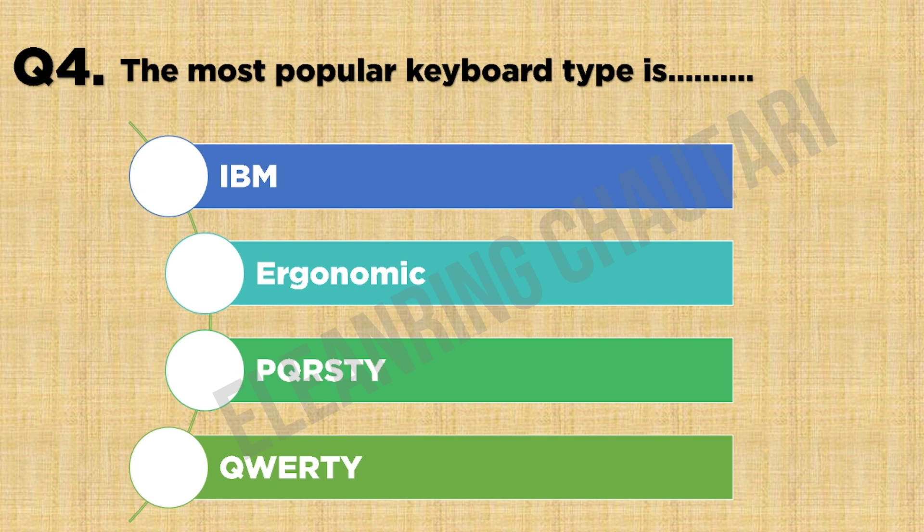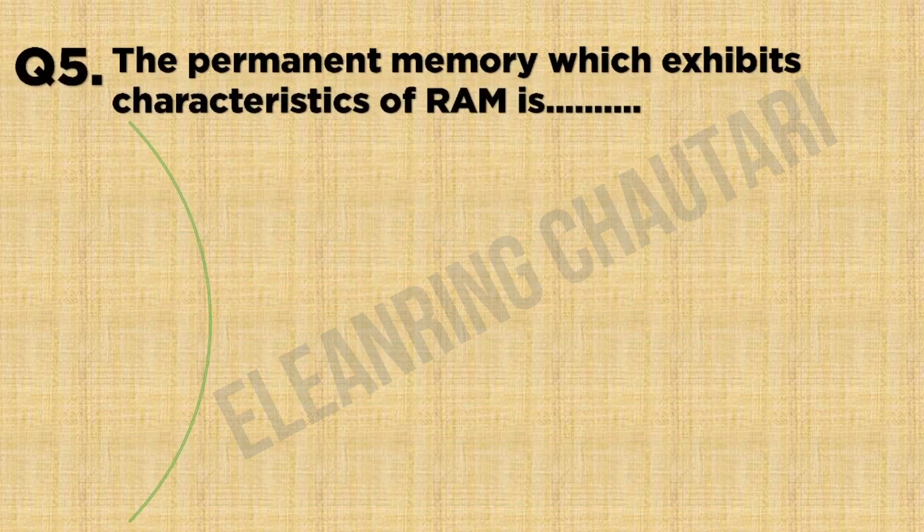The most popular keyboard type. Option C: QWERTY. Which is numbered by the layout. The bottom line into memory works, activates characteristics of RAM and startup back.